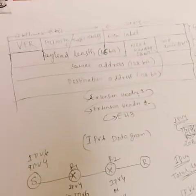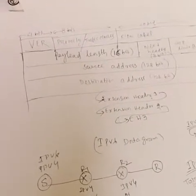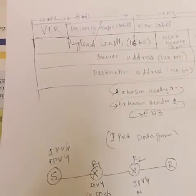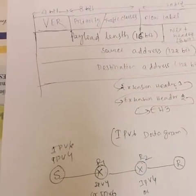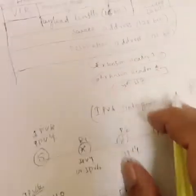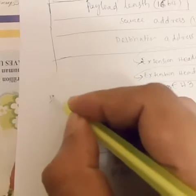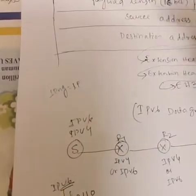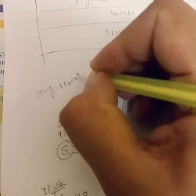Hello friends, now we will discuss about the IPv6 header. IPv6 is sometimes called IPng, that is Next Generation IP.